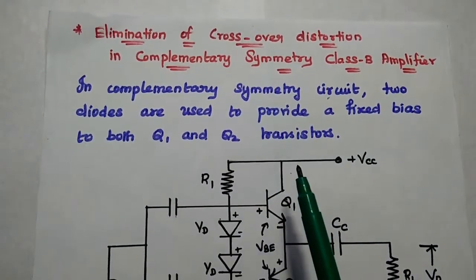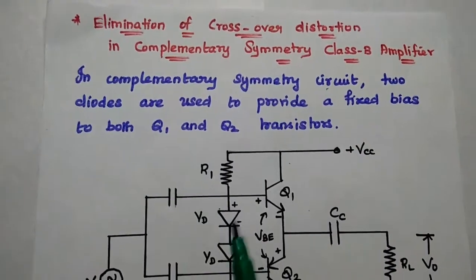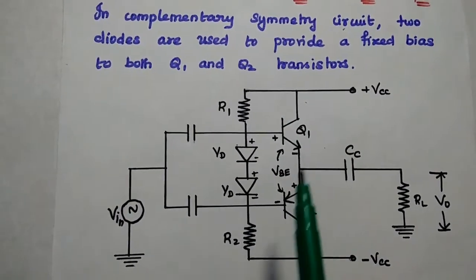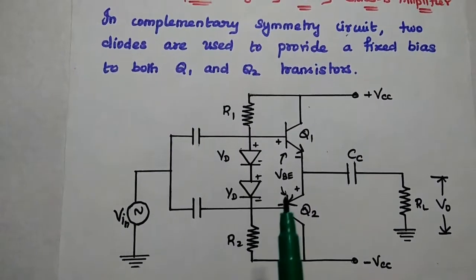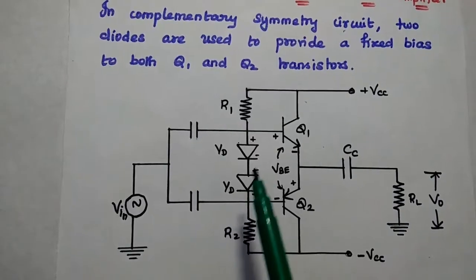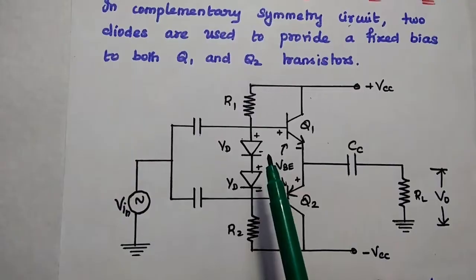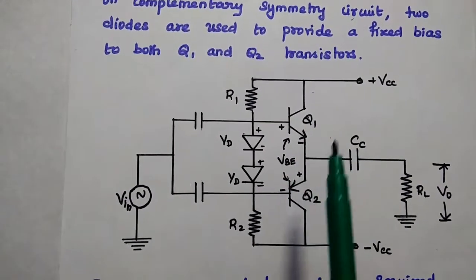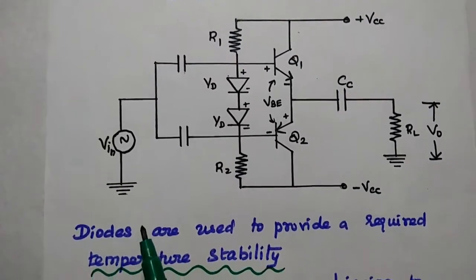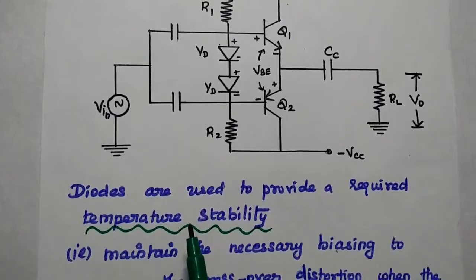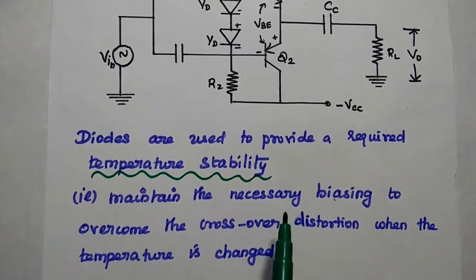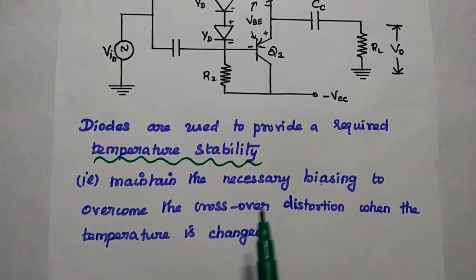Next is elimination of crossover distortion in a complementary symmetry class B amplifier. In this amplifier, two transistors of different types are used. We introduce a voltage divider circuit to provide an additional required forward bias to the transistors. Two diodes are used to provide the small required forward bias to both base-emitter junctions of Q1 and Q2. These two diodes provide the required forward bias to overcome crossover distortion and also provide temperature stability — maintaining the necessary biasing when temperature changes.